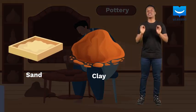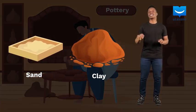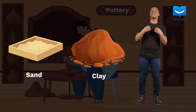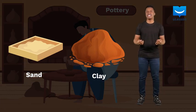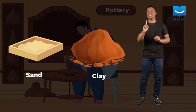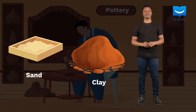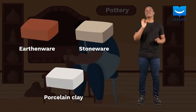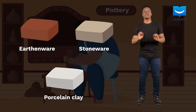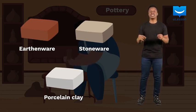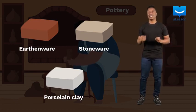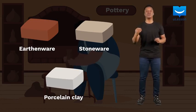Clay is a type of soil that is formed from the chemical weathering of rocks. It has very fine grains and is quite smoother than sand. There are many types of clay, but the major types used during pottery are earthenware, porcelain and stoneware.